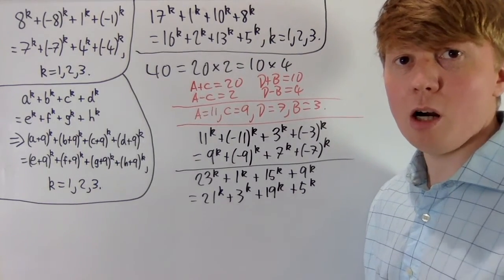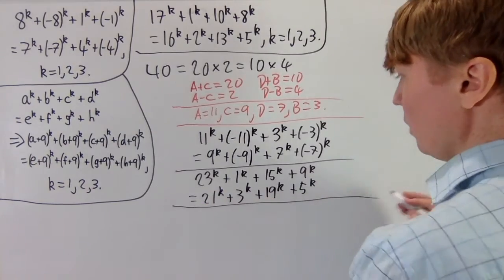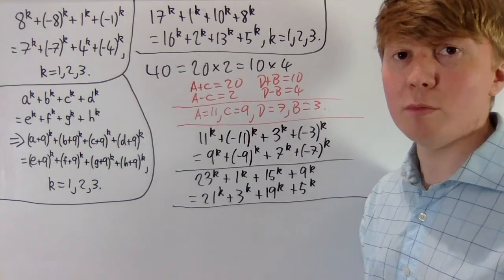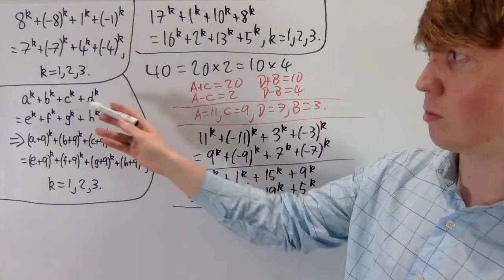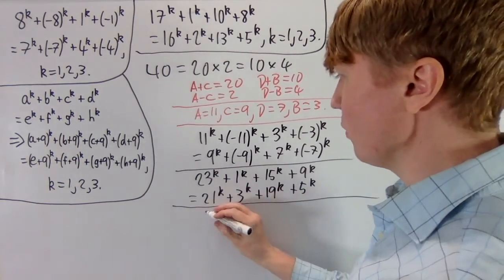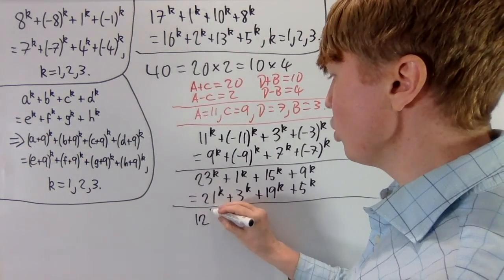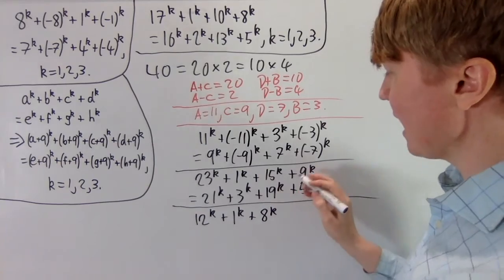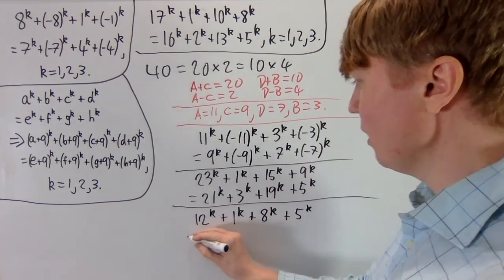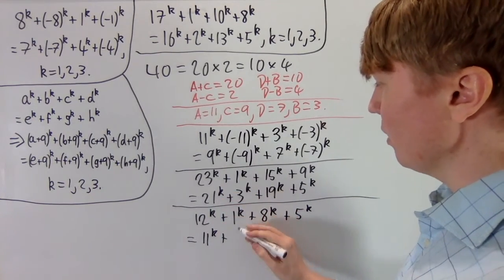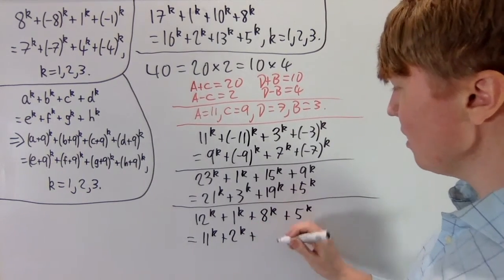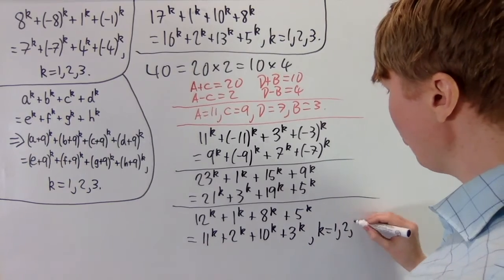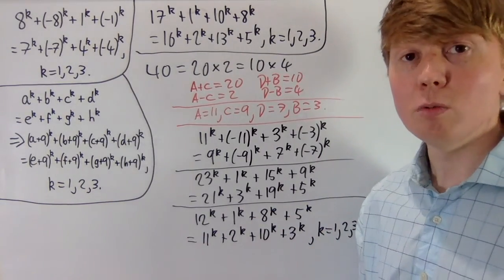All these integers are odd, so we can add 1 to each and then divide all by 2 — this scaling preserves the equal power-sum properties. Adding 1 and dividing by 2 gives: 12^k + 1^k + 8^k + 5^k = 11^k + 2^k + 10^k + 3^k, for k = 1, 2, and 3. Putting these in ascending order brings us back to the example from the very beginning of the video.